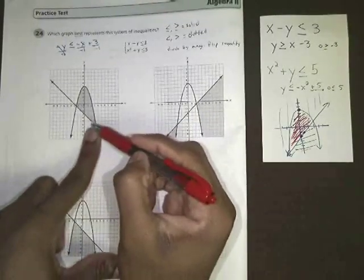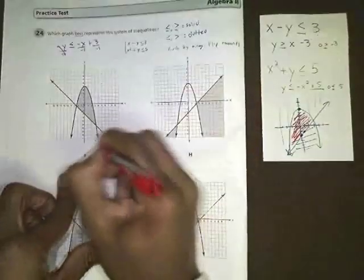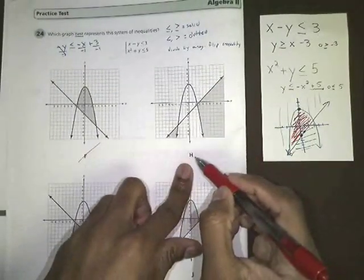Well this one, our line is supposed to be going up from left to right. This one is going down. So choice F can't be correct. This one here, choice H, both our lines and our parabola, they look correct, but the shading is wrong.